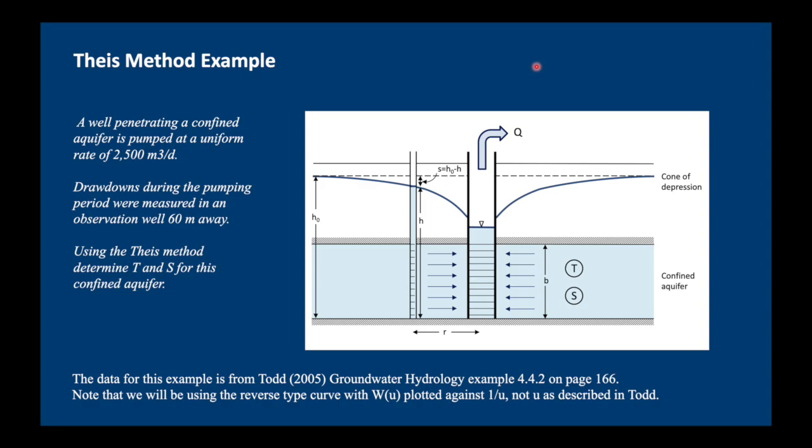I've taken some data from Todd Groundwater Hydrology and we have here a well penetrating a confined aquifer and it's pumped at a uniform rate of 2500 cubic meters per day. We have an observation well located 60 meters away from the pumping well and we should calculate the transmissivity and storativity of this confined aquifer.